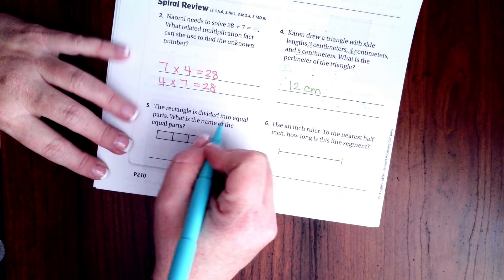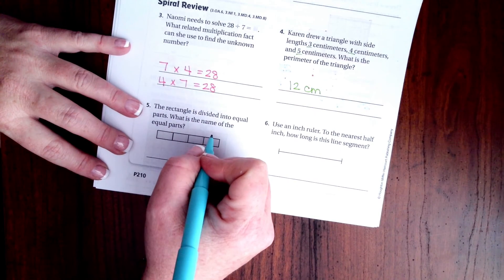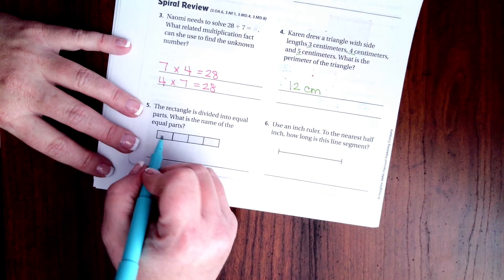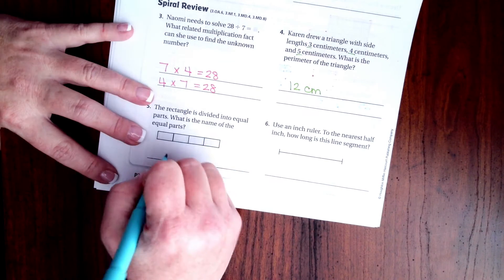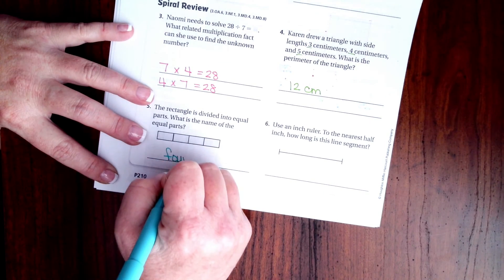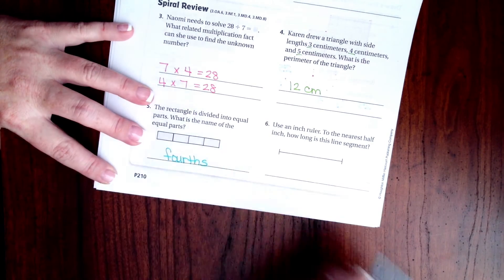All right. The rectangle is divided into equal parts. What is the name of the equal parts? Well, there's 1, 2, 3, 4 parts, so it is fourths. Done.